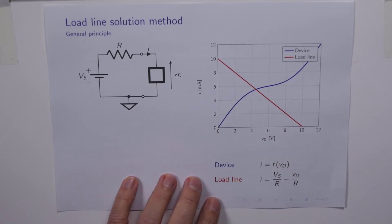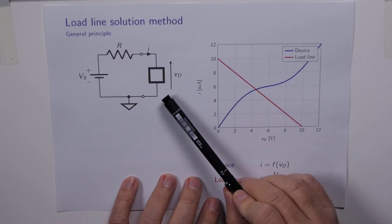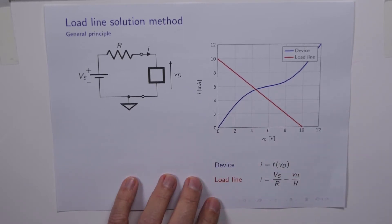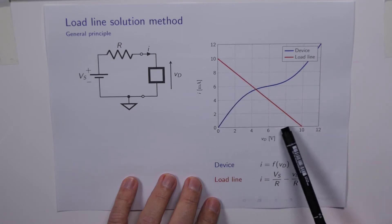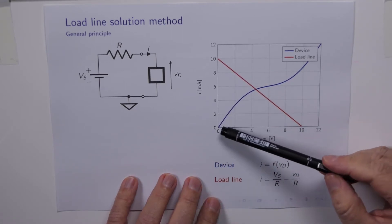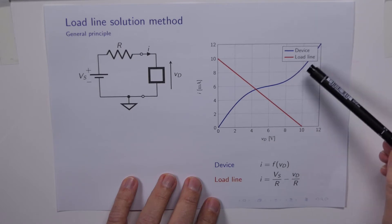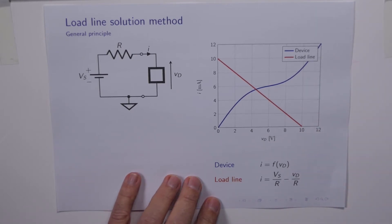Now for a two-terminal device like the one shown here, it will have a single terminal characteristic, and that's usually supplied by the manufacturer. In this diagram on the right here, we've got the current that flows through the circuit, in particular the device, and the voltage across the device. And the blue curve here represents the behavior of the device as determined by somebody else.